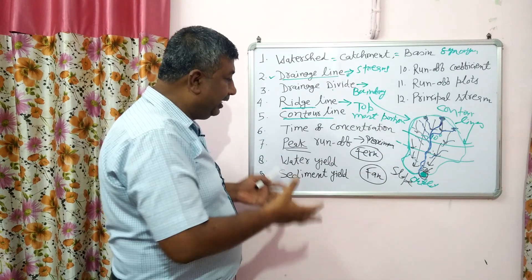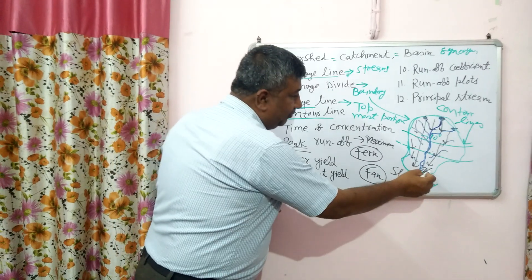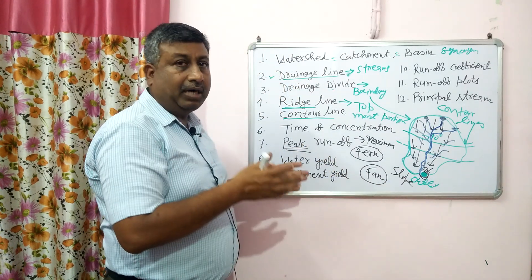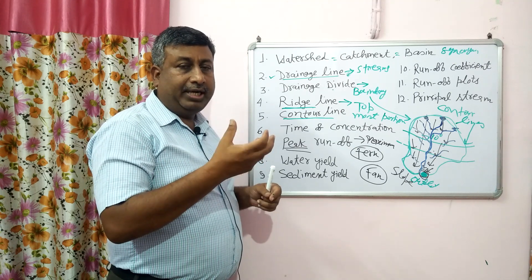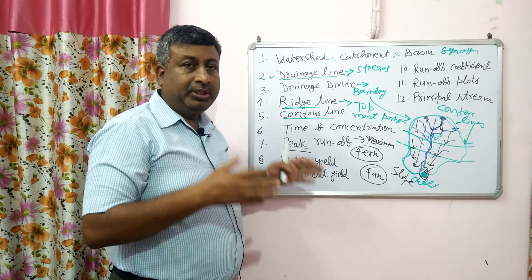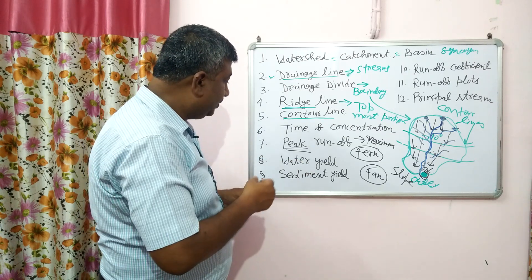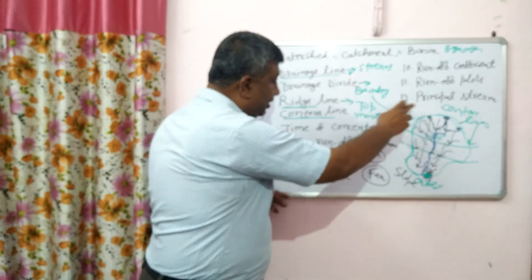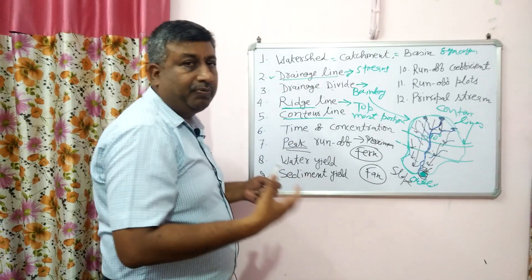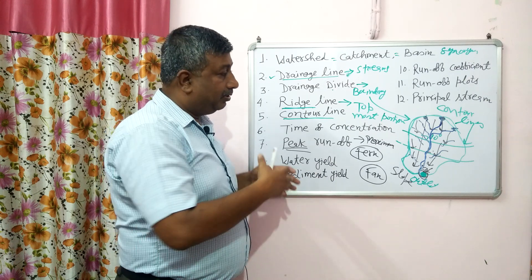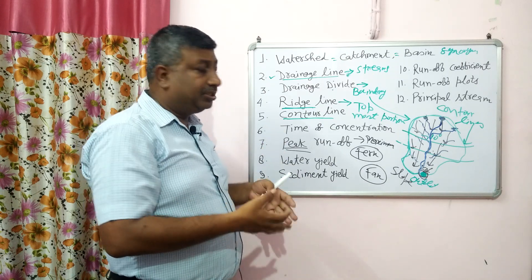Water yield means water production — it is the total annual amount of runoff that is collected at the outlet in one year. It depends upon watershed size, watershed shape, number of rivers and streams, rainfall, drainage characteristics, and a number of other factors.